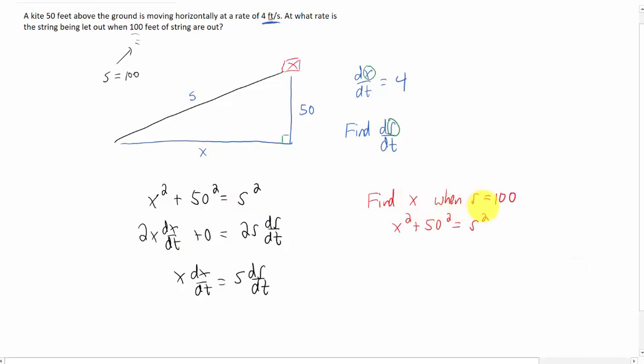So we can find X when S is 100 using just the Pythagorean theorem equation. Plugging in S is 100 and solving for X gives me X is the square root of 7500.